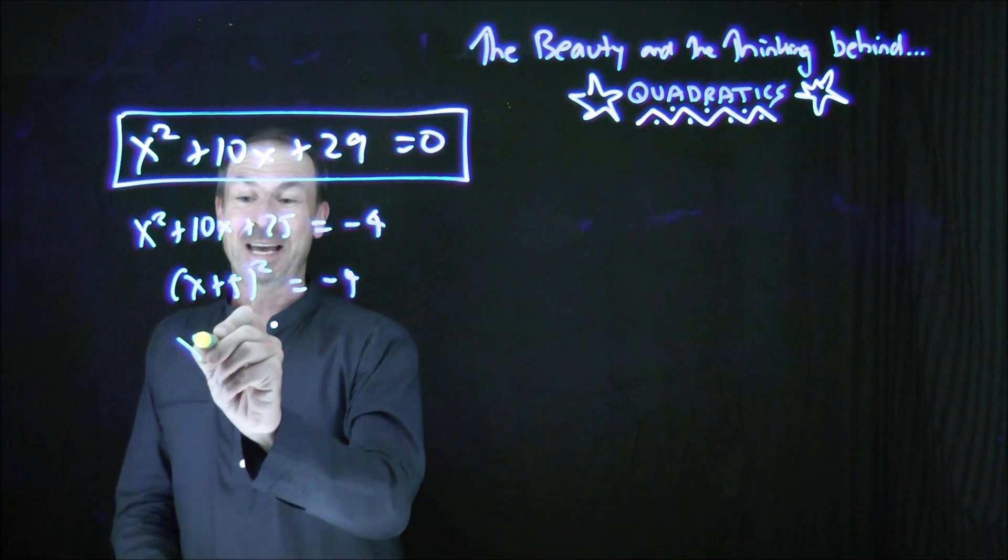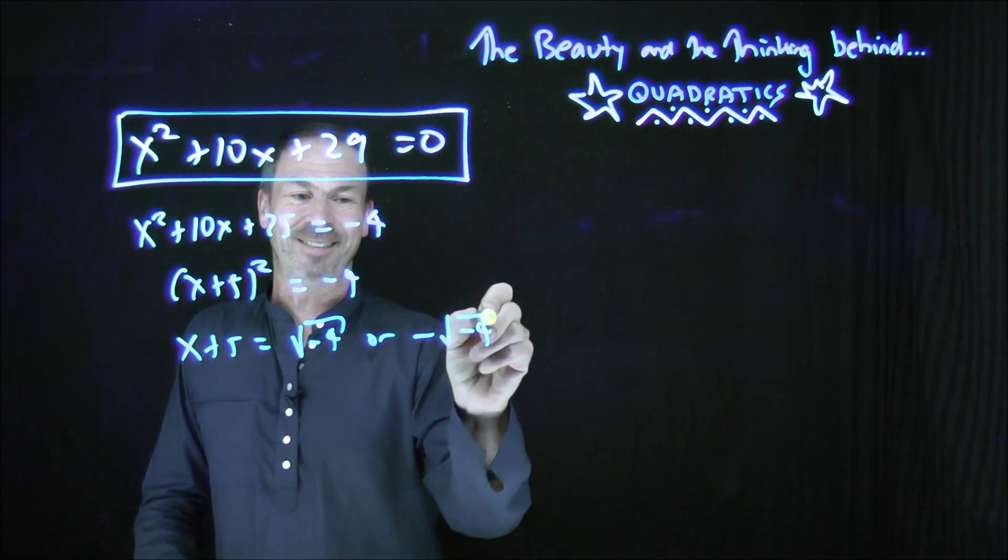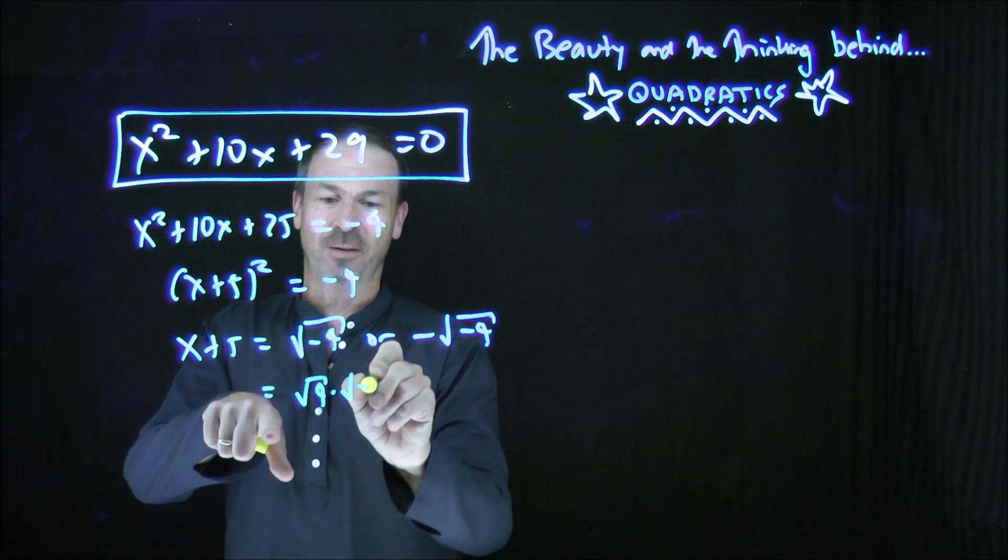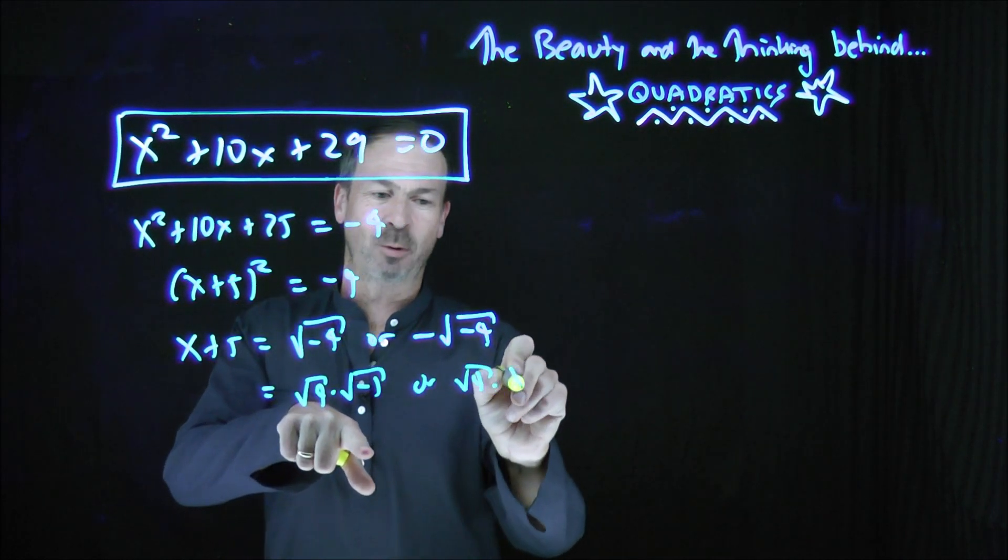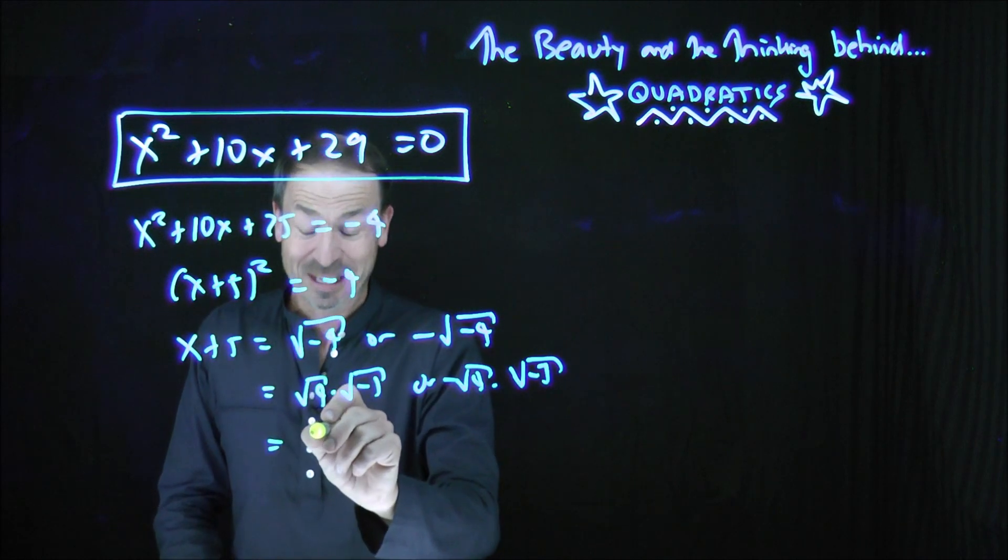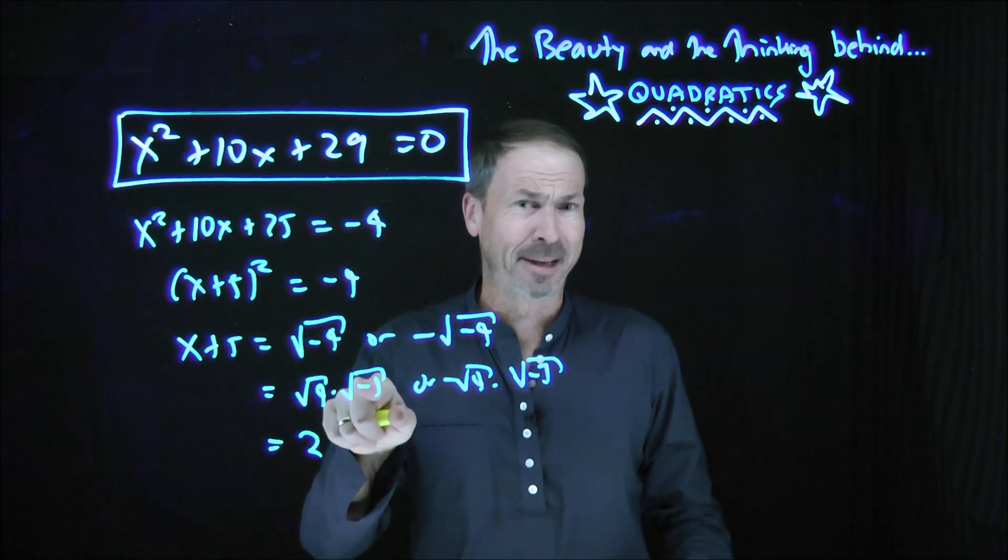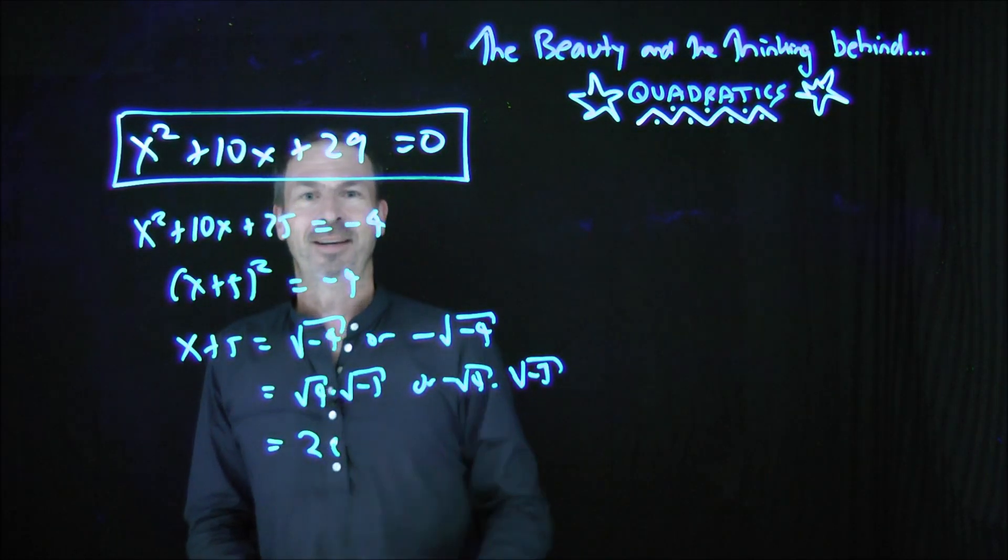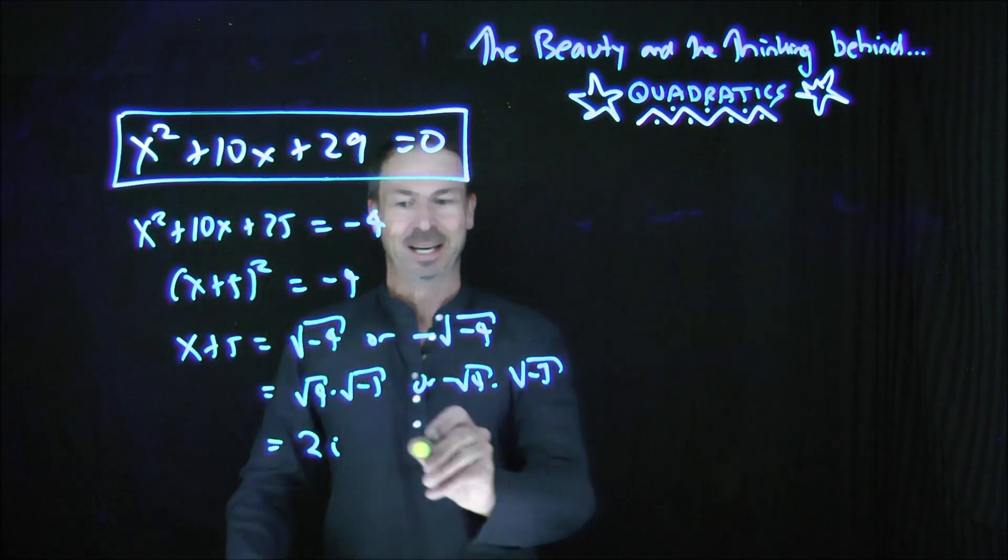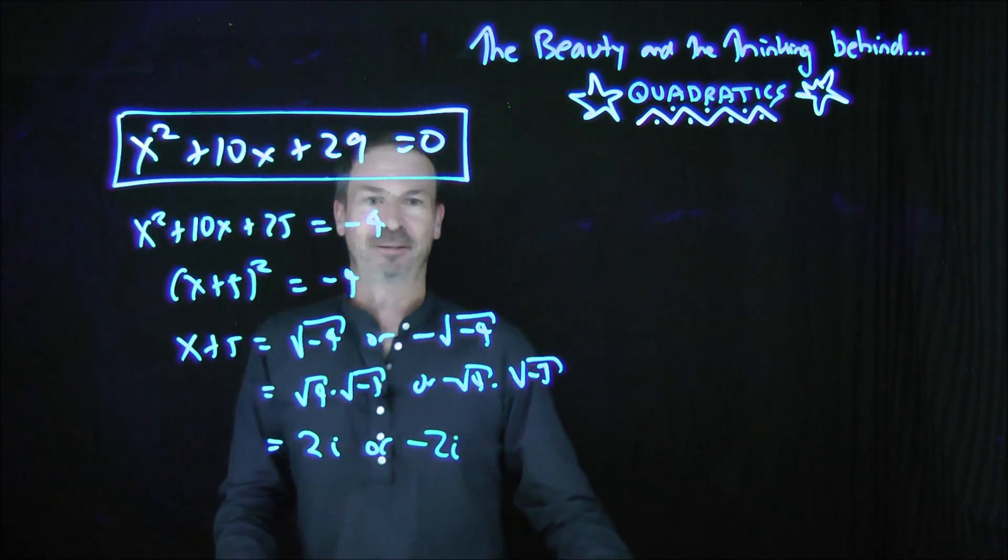But with complex numbers, we like to believe there is something called the square root of negative 1, in which case I could do this. x + 5 is the square root of -4, or the negative version of that. The square root of -4 is the square root of 4 times the square root of -1, or the negative version of all that. The square root of 4 I could at least do is 2. And people like to call the square root of -1, i. It's an imaginary number, like I can't really do it, but as a system of algebra, it seems complete. In fact, according to the fundamental theorem of algebra, it is complete.